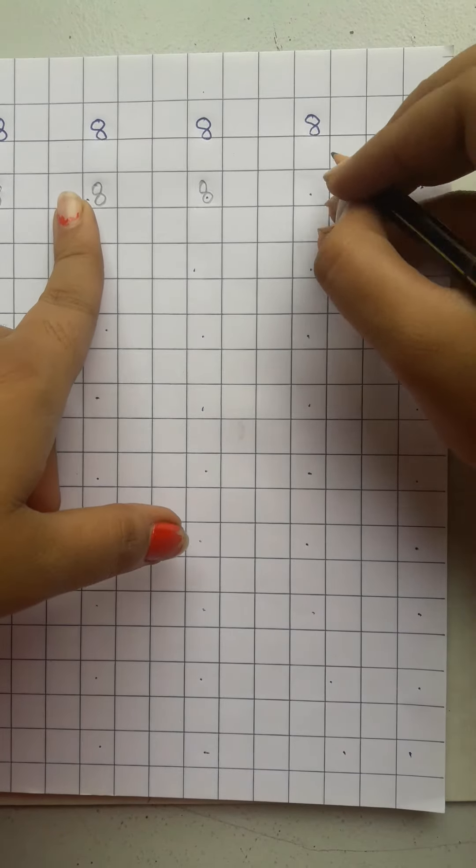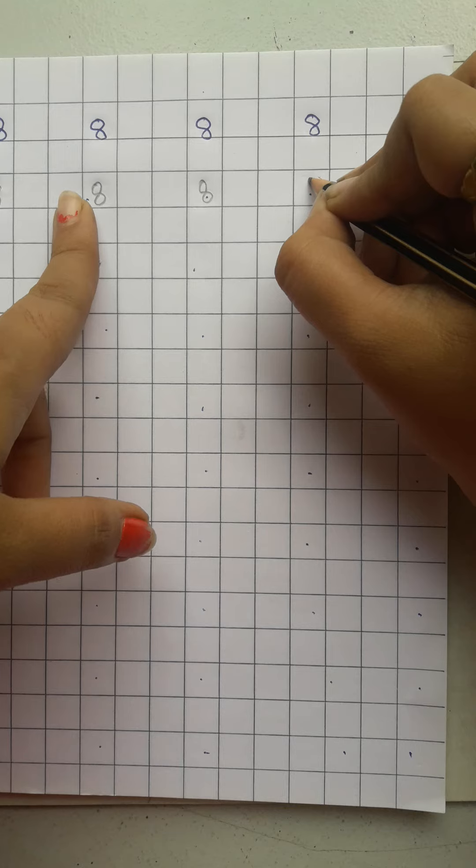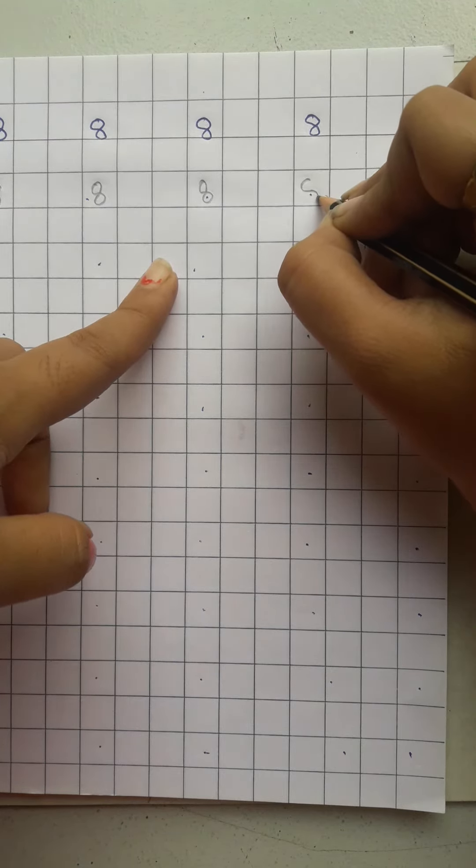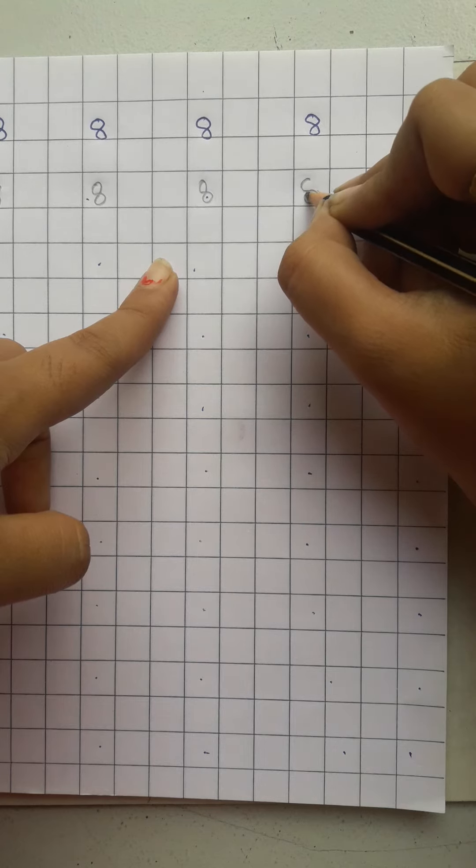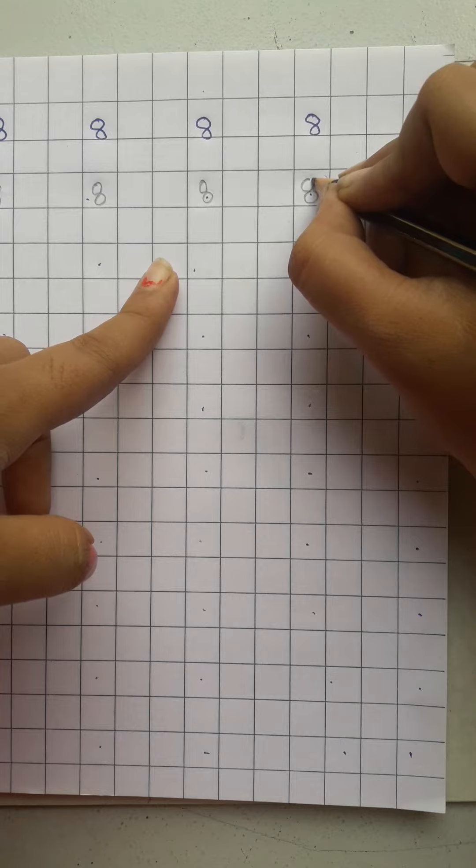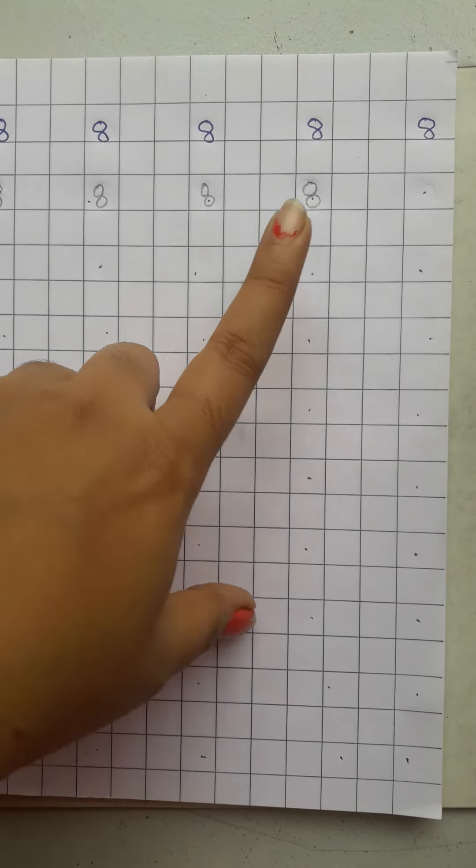For 8, first of all, you have to start from here. Like this. Make a half curve. Then again a reverse curve. Make a circle like this. Then make a reverse curve again. Like this. This is your 8.